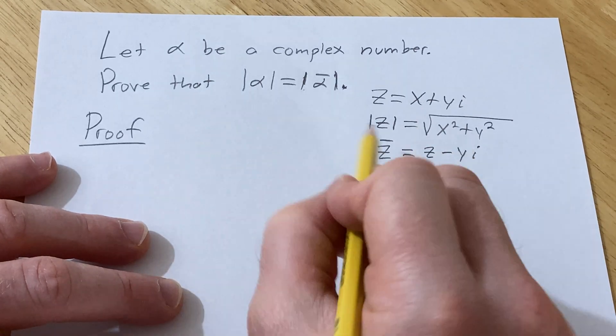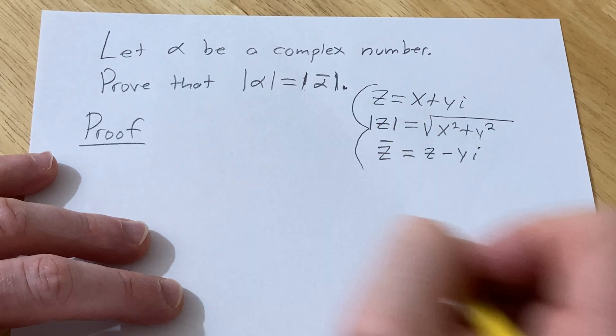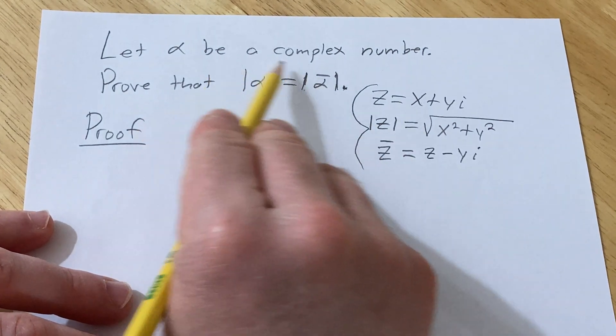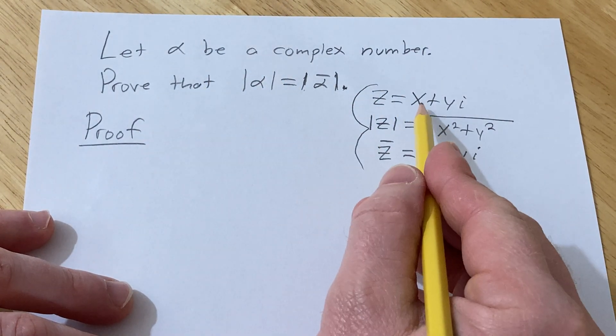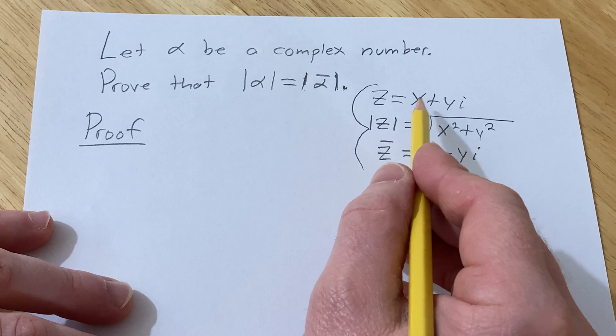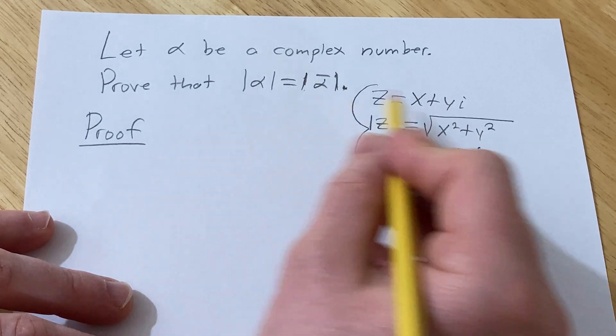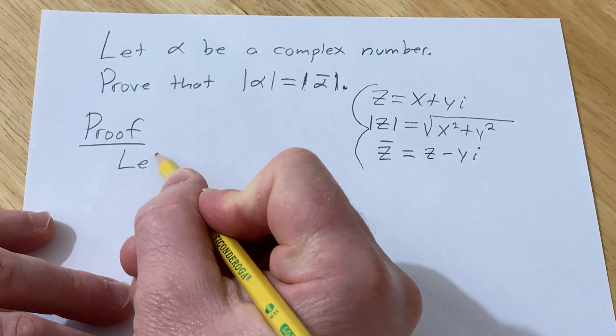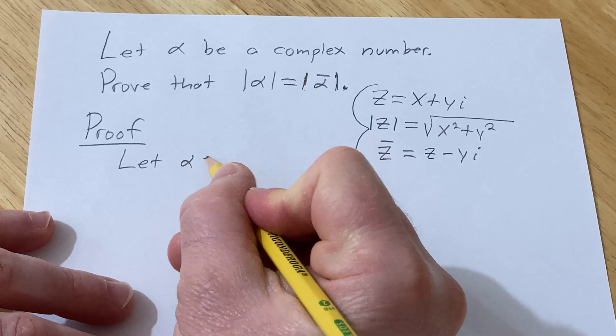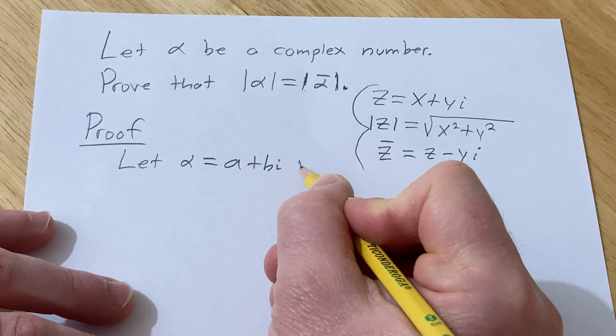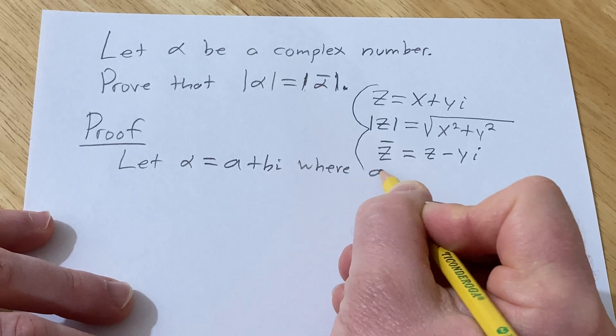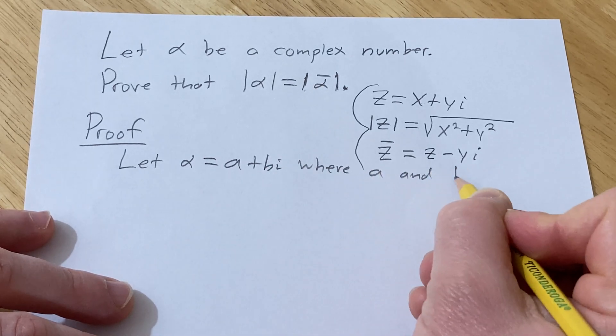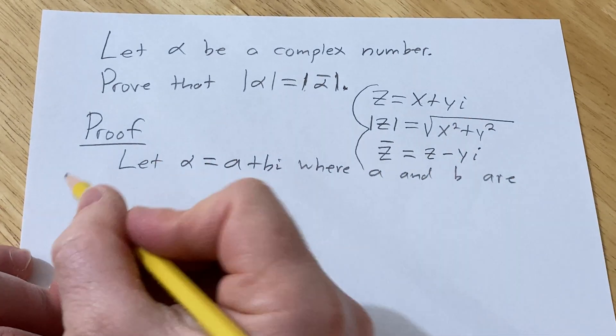Now that we have all of this out of the way, we can do our proof. We'll start by letting alpha be a complex number, which means we can write it in the standard form. But I'm going to use different variables to make sure you understand. Let alpha equal a plus bi, where a and b are real numbers.